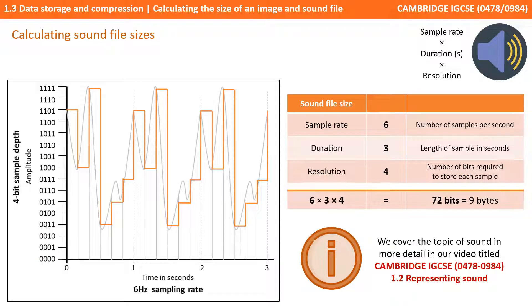So we end up with six times three times four, which is 72 bits. If we divide that by eight to get bytes, this sound file is nine bytes in size.